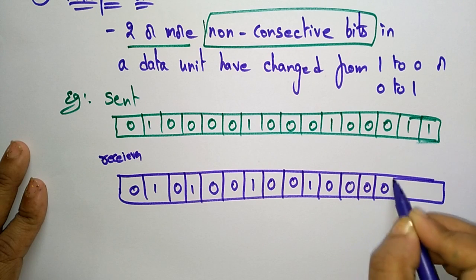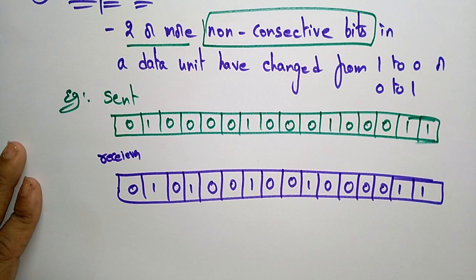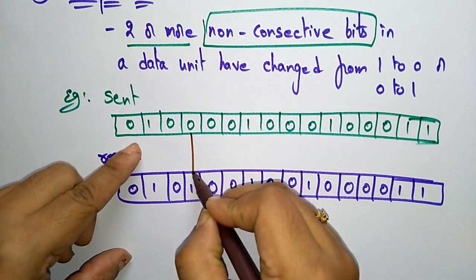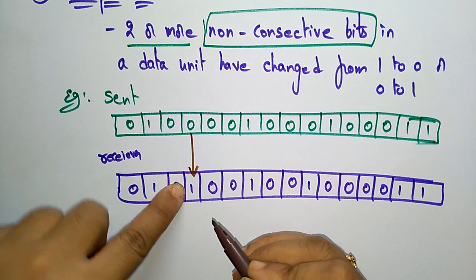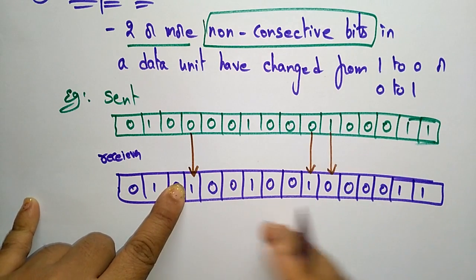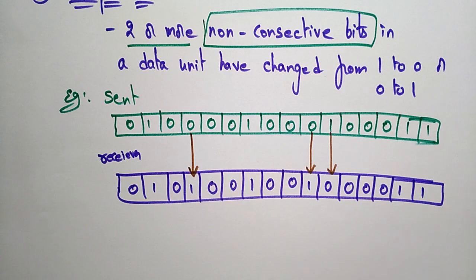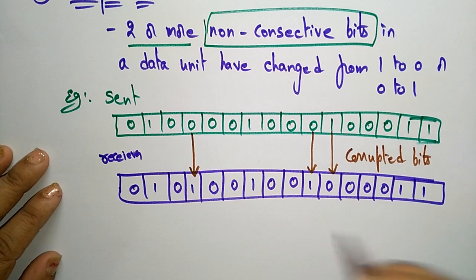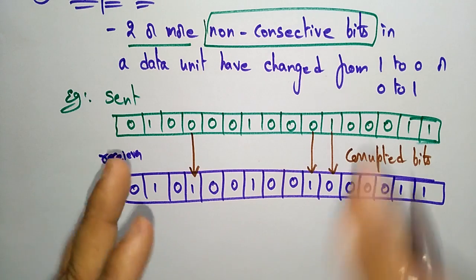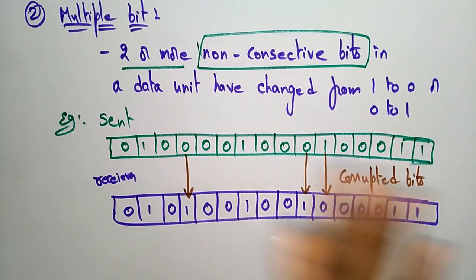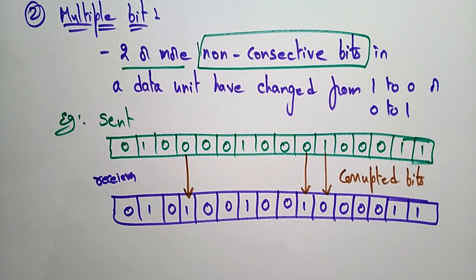The receiver receives: 0 0 0 0 1 1. Looking at the errors here — some bits are the same, but at certain positions a 0 changed to 1, giving one error, and then more errors at further positions. These are non-consecutive corrupted bits — for example at the sixth, twelfth, fifteenth, and sixteenth positions. This is the multiple bit error.